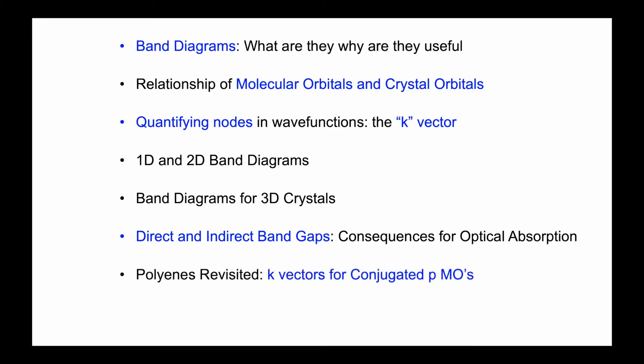Finally, we'll come back and revisit the polyenes where we started with molecular orbital conjugation and talk about k-vectors for those systems. Then lastly, we'll get into metal-insulator transitions and briefly discuss the Peierls distortions.